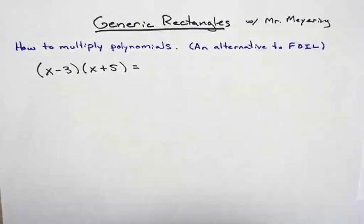Hello, this is Mr. Meiering with your Mad Minute video on generic rectangles, a way to multiply polynomials as an alternative to the FOIL method.